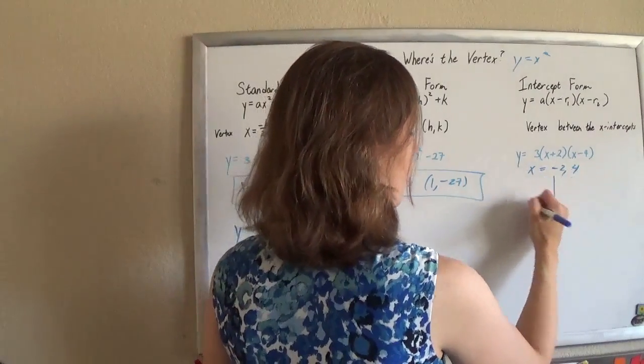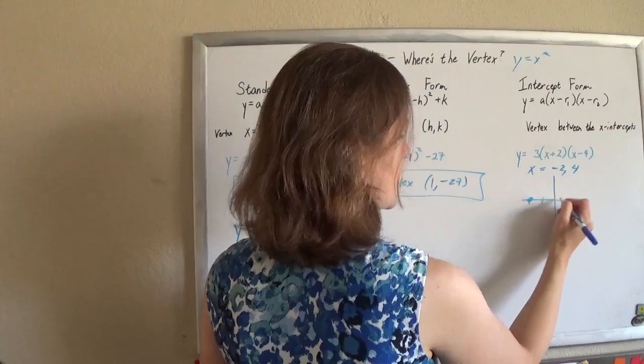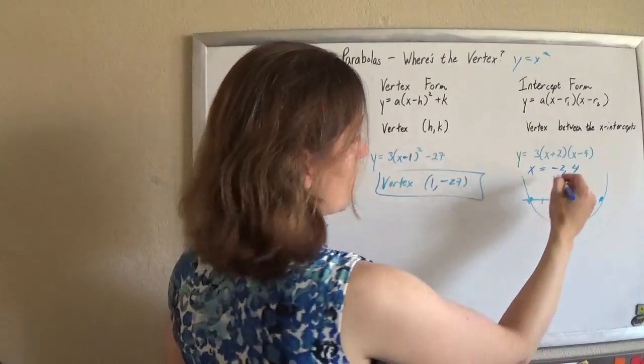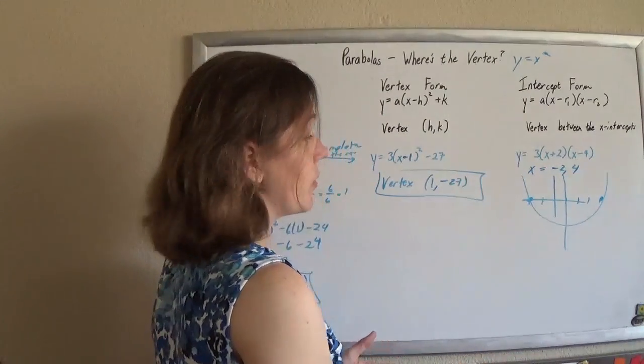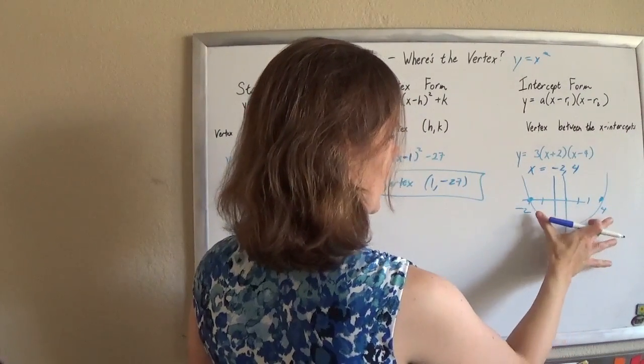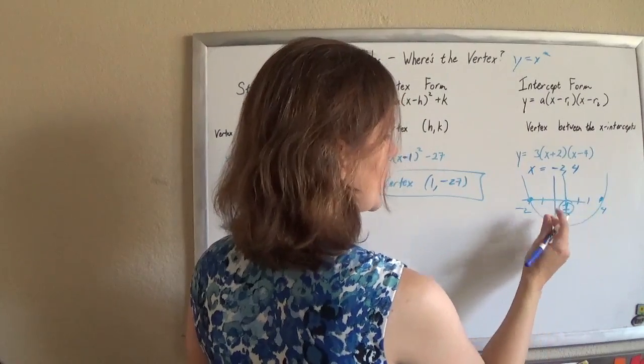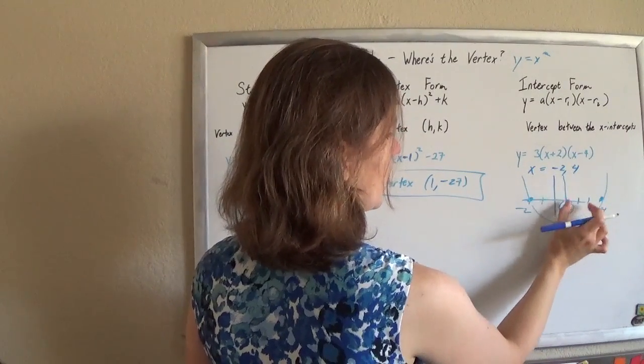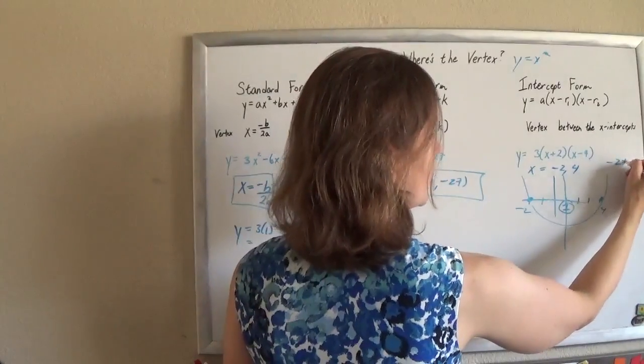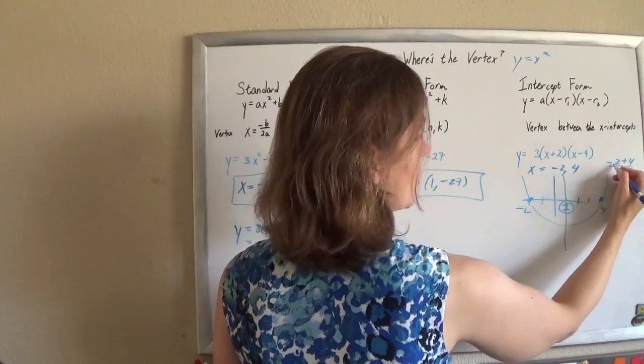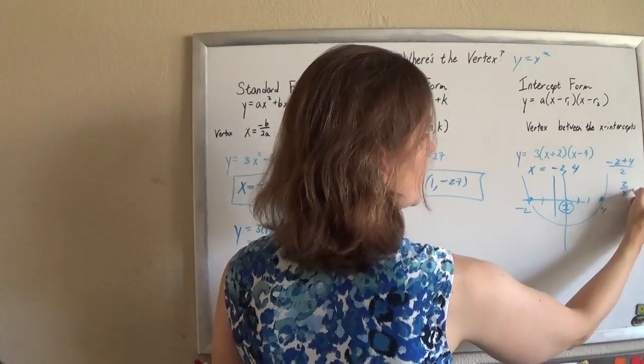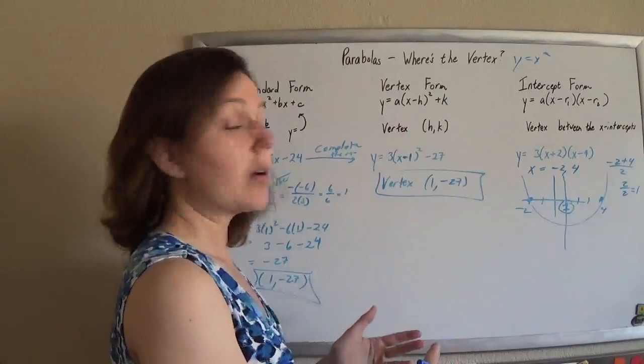If I know my x-intercepts are at negative 2 and positive 4, then I know since my parabola is nice and symmetric, my vertex should be smack in between negative 2 and 4. You can either visualize negative 2 and 4 and go, it looks like 1 is right between there. It's 3 away from negative 2 and 3 away from 4. You could also take an average. To find the middle, you could average the 2 and the 4. Add the negative 2 and the 4, add them up and divide by how many you have. Negative 2 plus 4 is 2 divided by 2 is 1, and that gives you the middle, which would be 1.